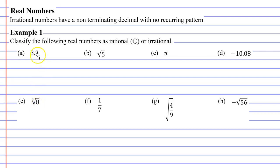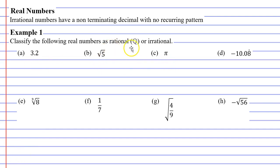We're going to be doing a couple of things in this video. We're going to be talking about the set of real numbers, and near the end of the video we're going to complete example one. For example one, we're going to classify each number below as either rational or irrational.